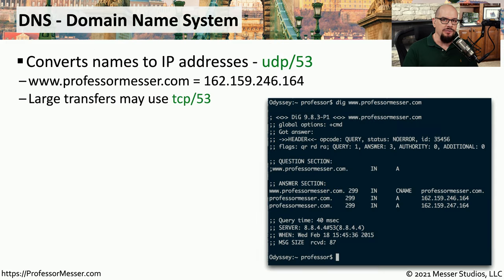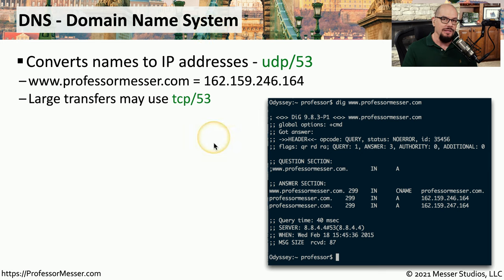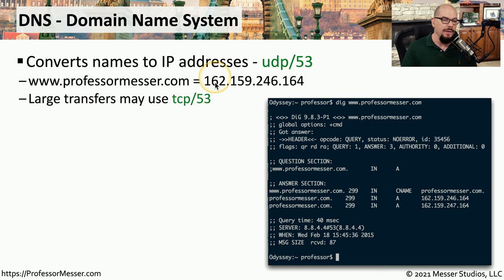If you were to type professormesser.com into your browser, it somehow manages to find the Professor Messer web server. The way it's able to do that is by performing a name resolution using DNS, or the Domain Name System. DNS is commonly used to convert the name you're typing in to the IP address of the service. For example, www.professormesser.com might have a specific IP address associated with it. Most DNS communications use the UDP protocol on port 53.